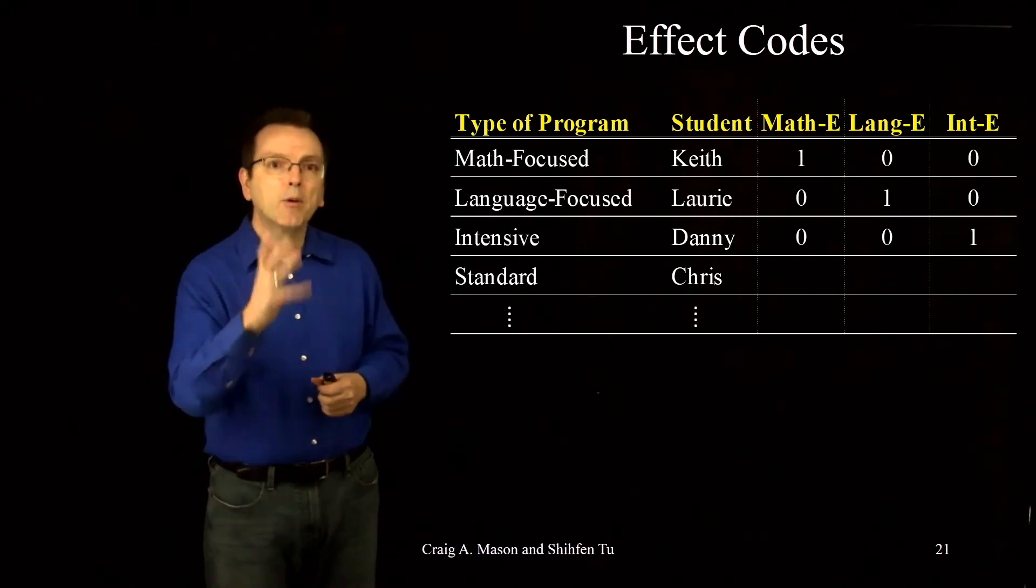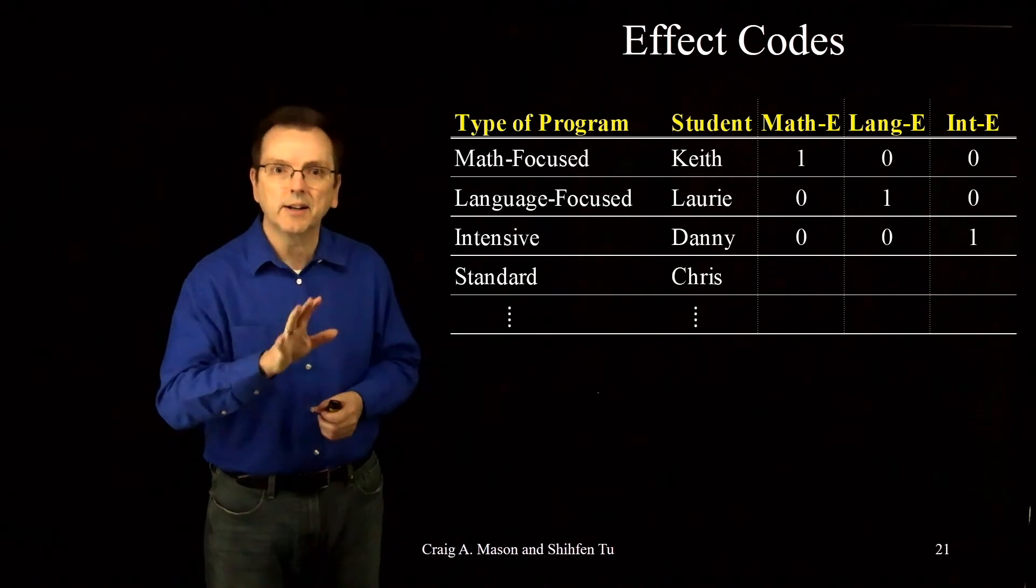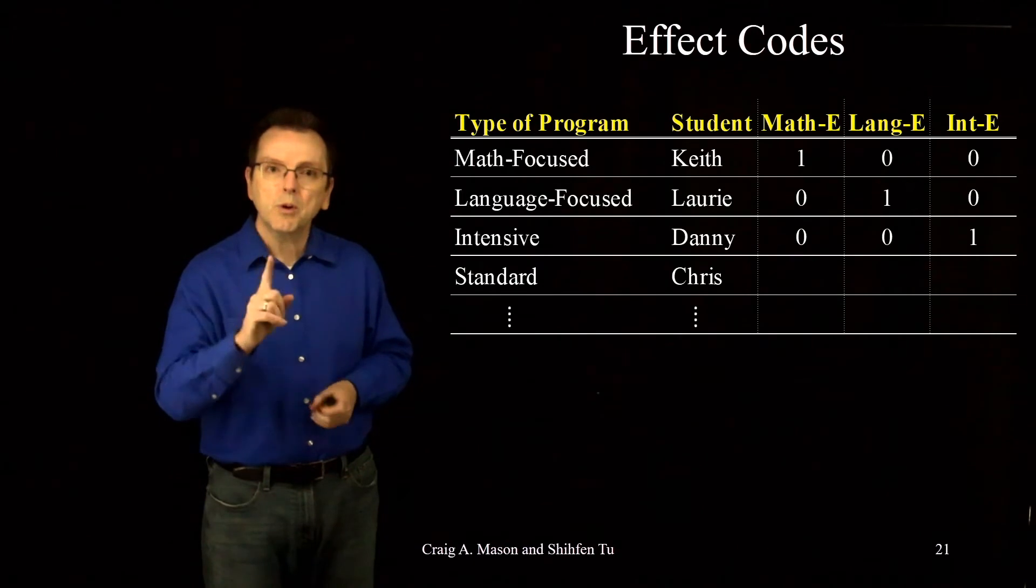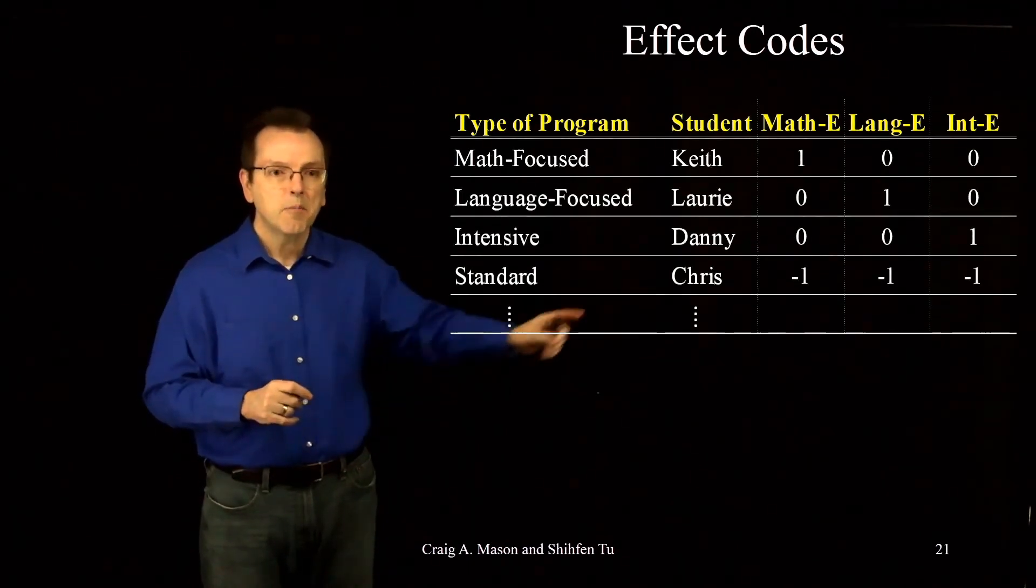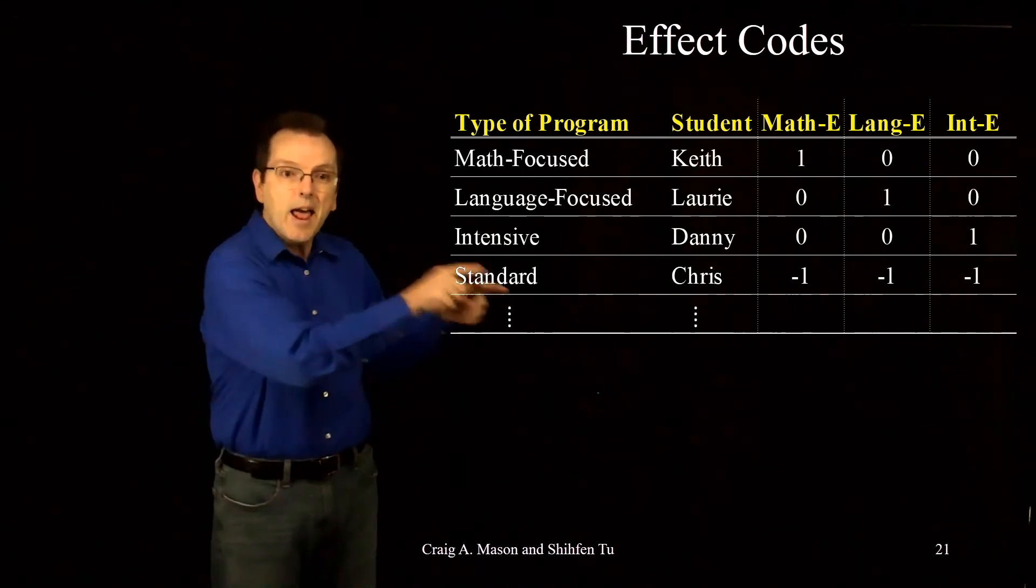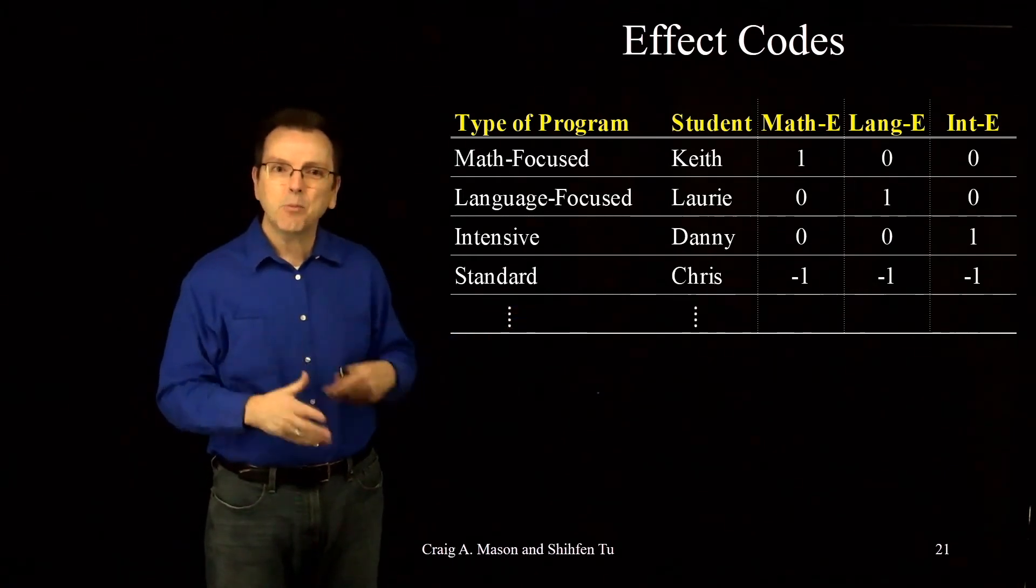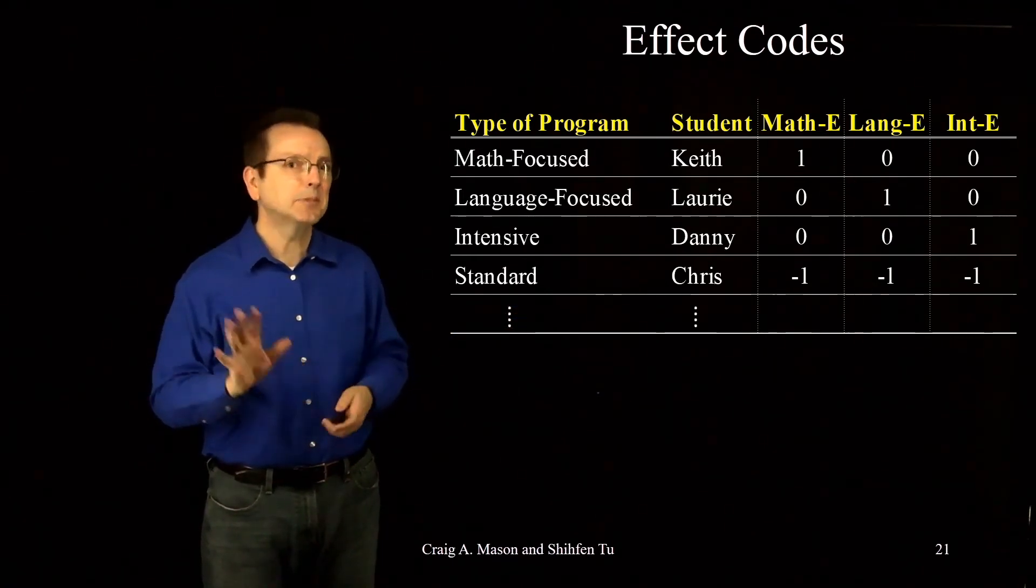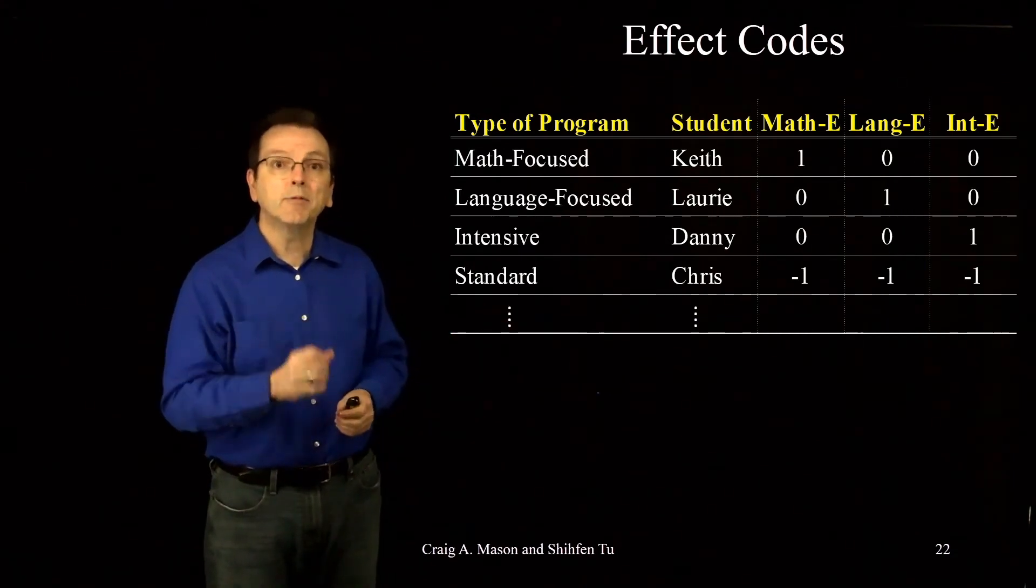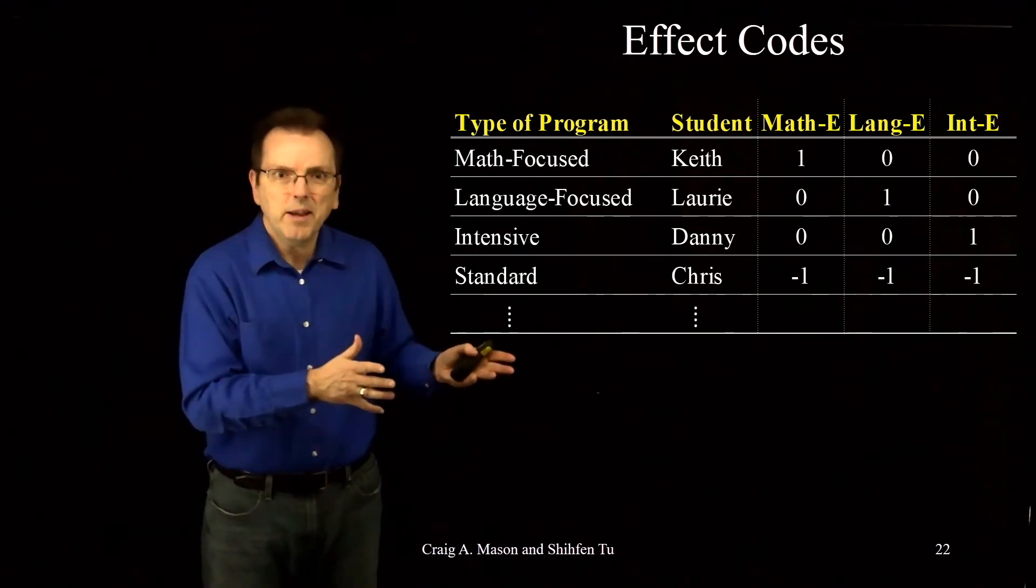But now, what about Chris? Chris is in the standard curriculum, which is not one of our three effect codes. Chris would be coded as minus one on all three of the effect codes. That's the difference. And that's where students mess up sometimes. They don't make every effect code minus one for people in that group. So don't make that mistake.